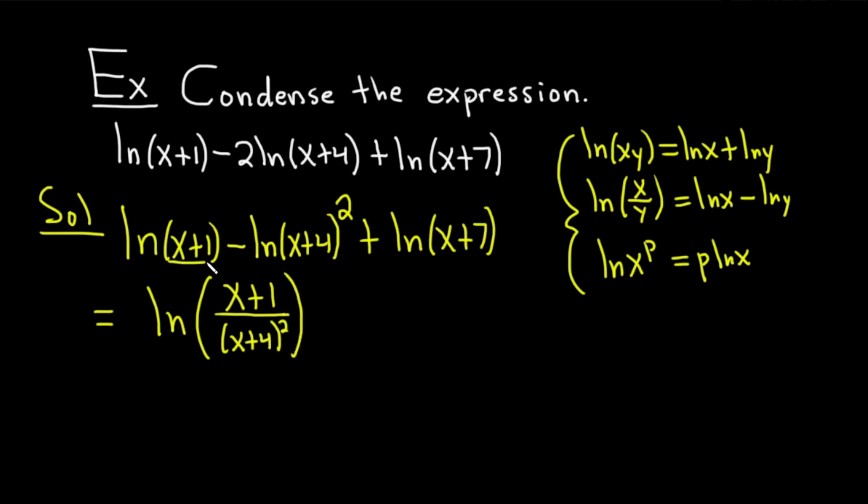So it's just the natural log of x plus 1 minus the natural log of x plus 4 squared is the natural log of x plus 1 over x plus 4 squared. So whatever's first goes on top, whatever's second goes on the bottom. And then we still have this straggling piece, natural log of x plus 7.